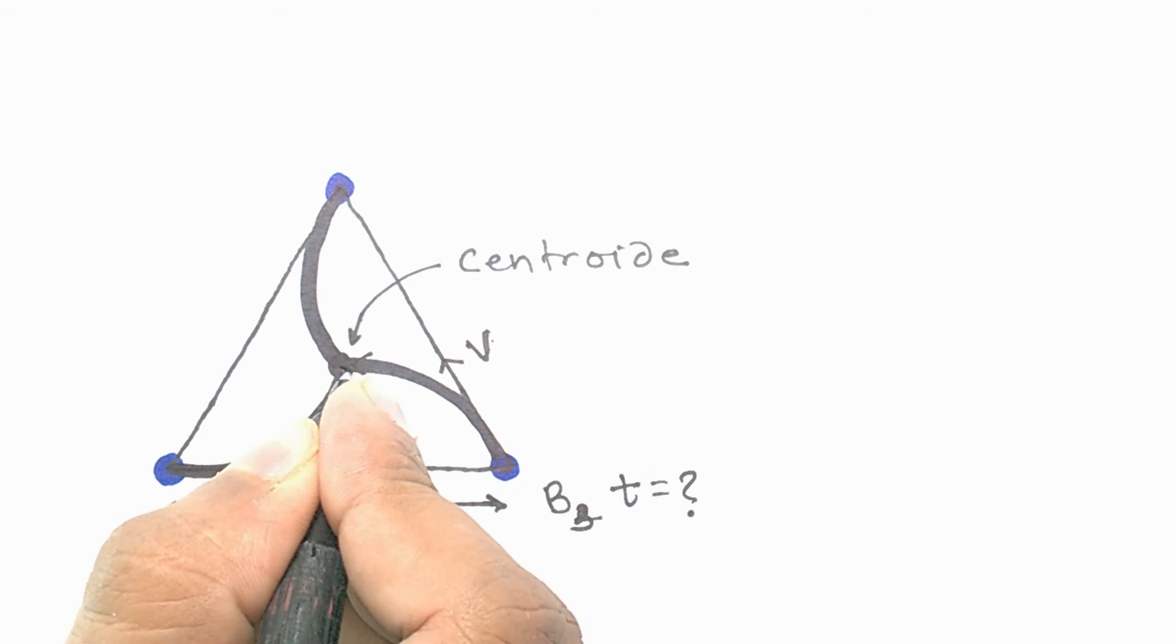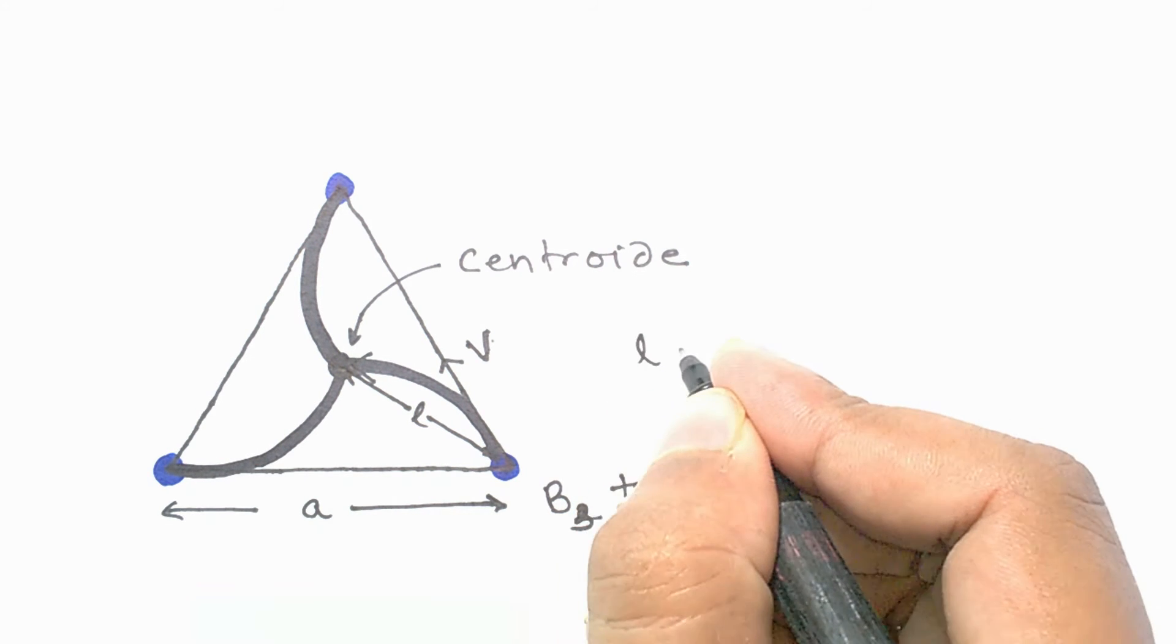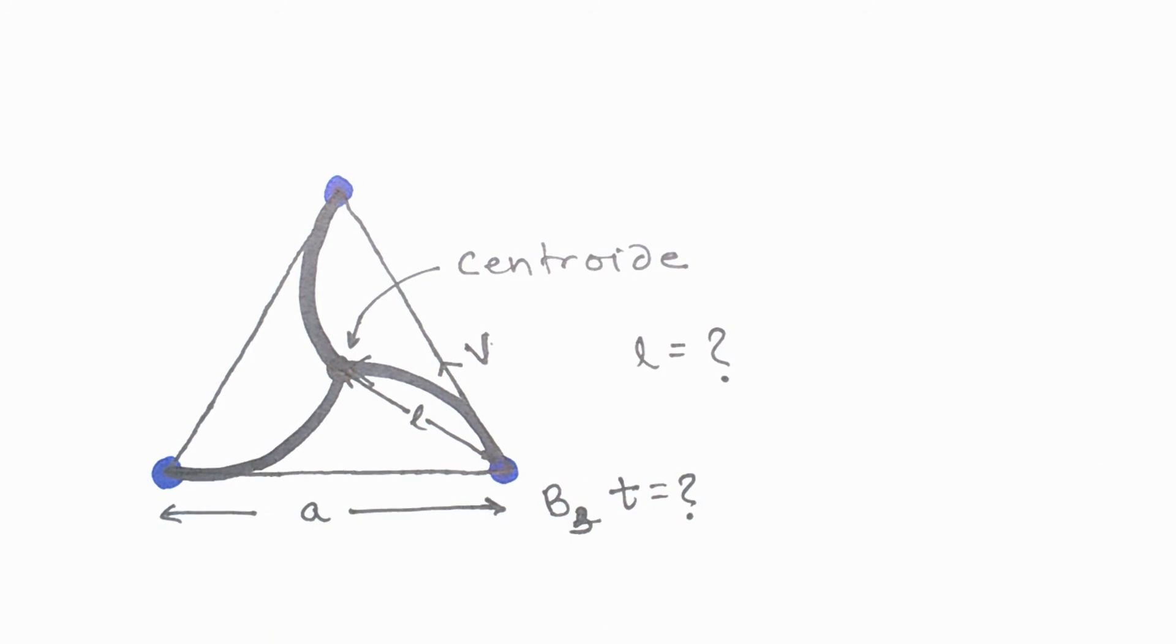Now what we have to do is to find the length of the line joining the centroid and the third vertex. To do this, we will draw another trick from the bag of tricks of Pythagoras.